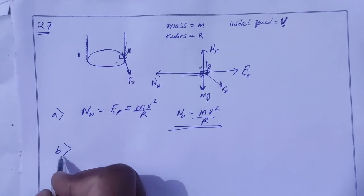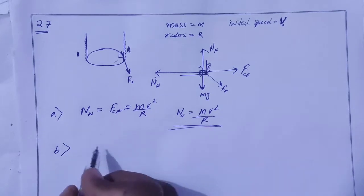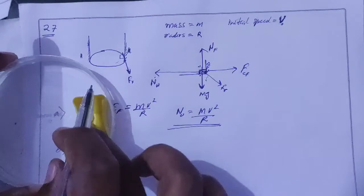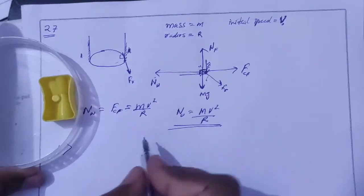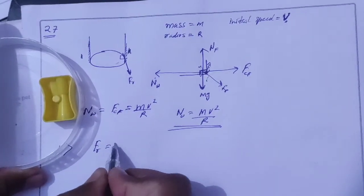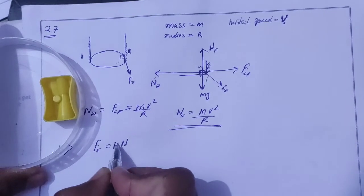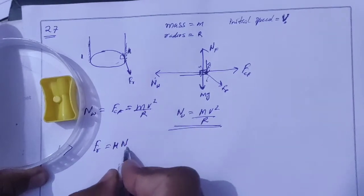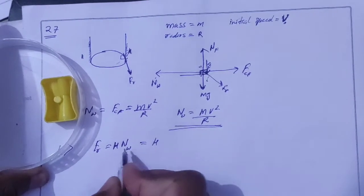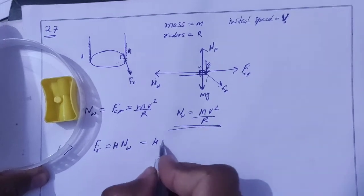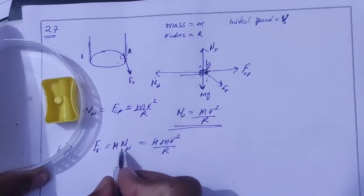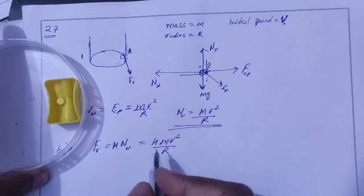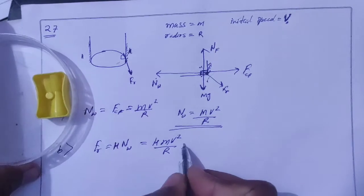Second question: the friction force. Friction force is equal to mu times N, which is mu times mv²/r. Note that the floor is smooth, so there is no normal force from the floor contributing. Therefore the friction force from the wall is mu·mv²/r.